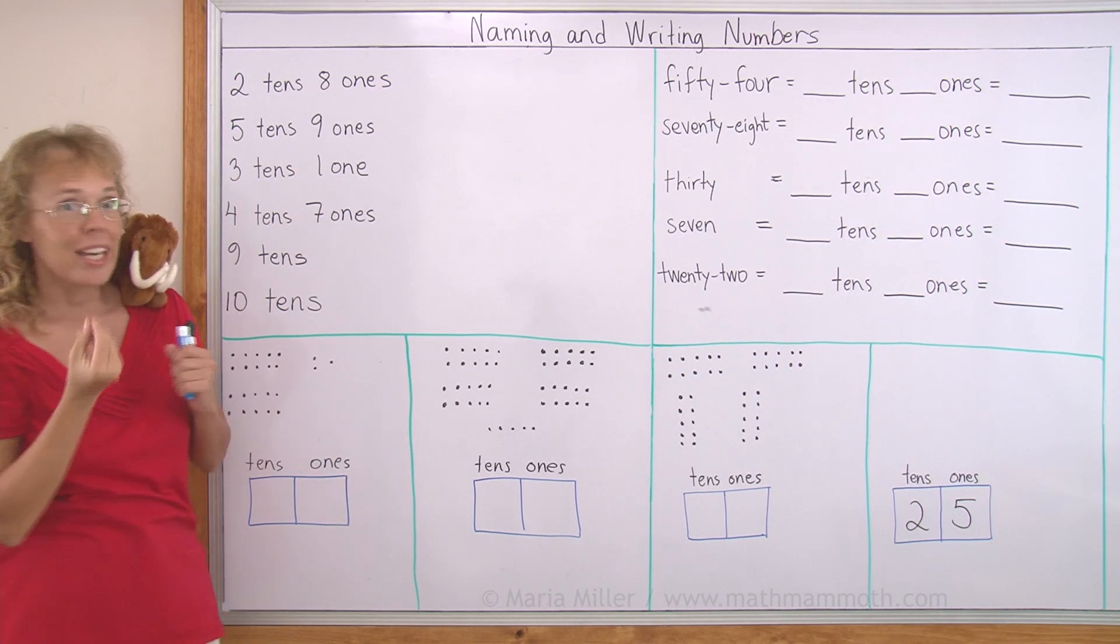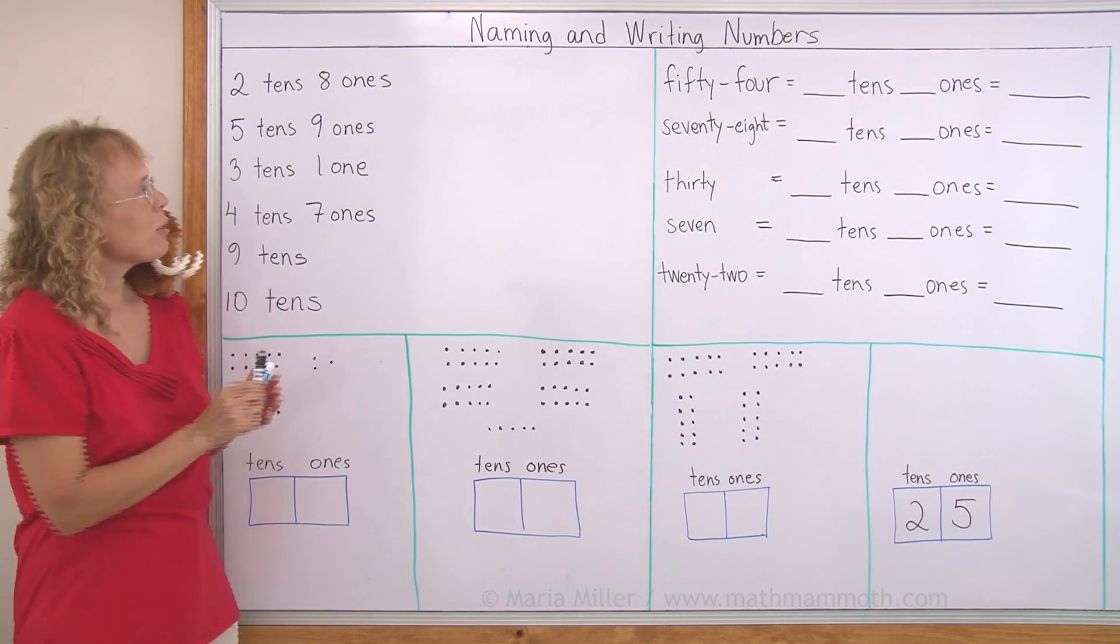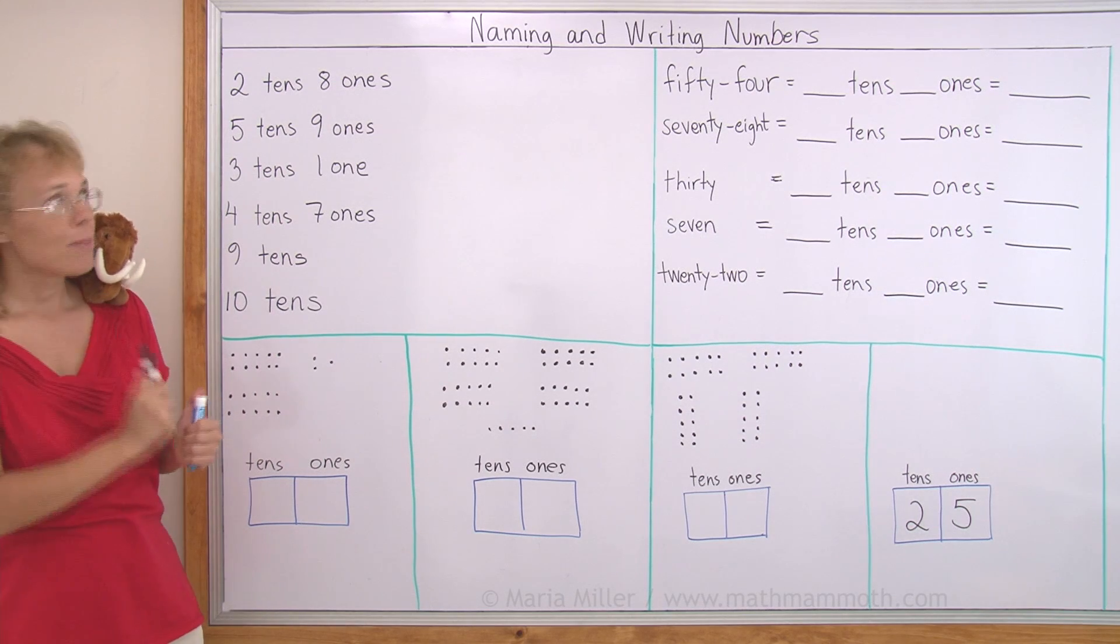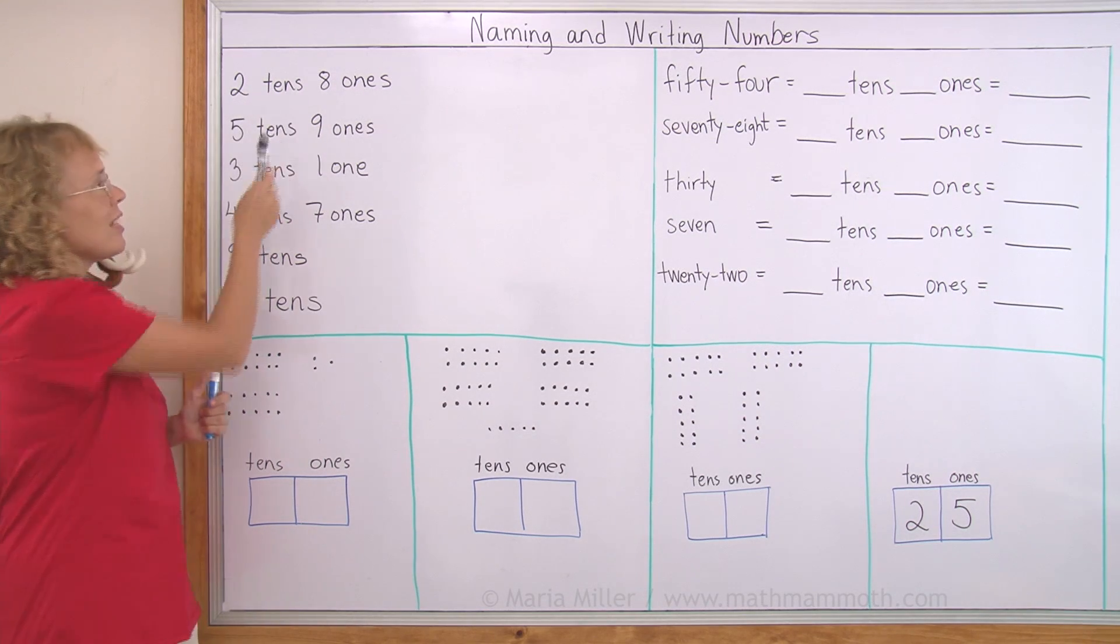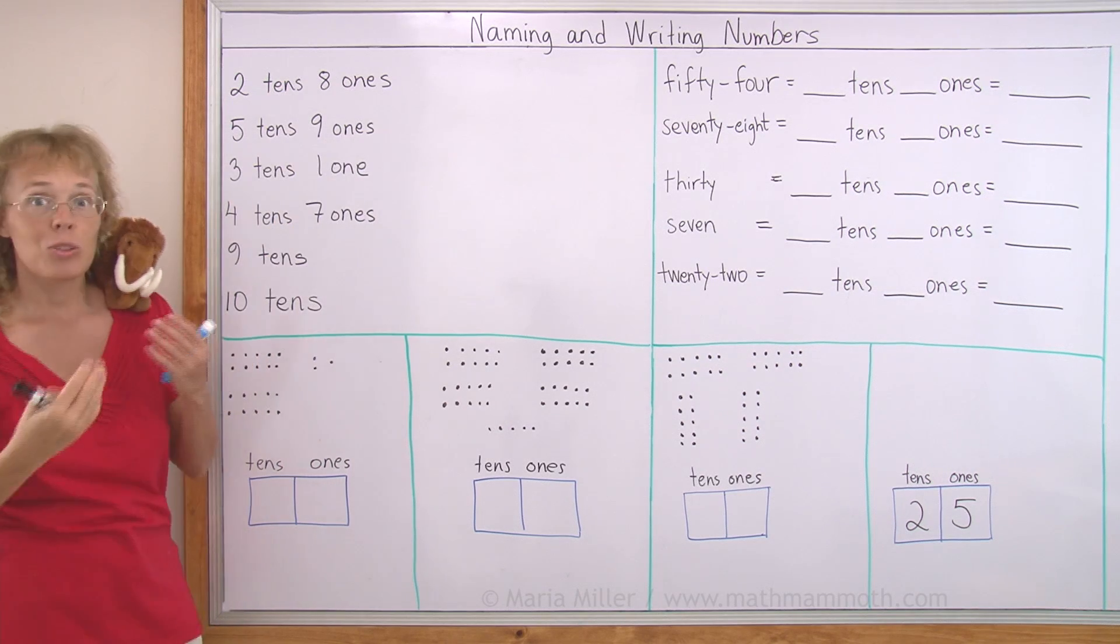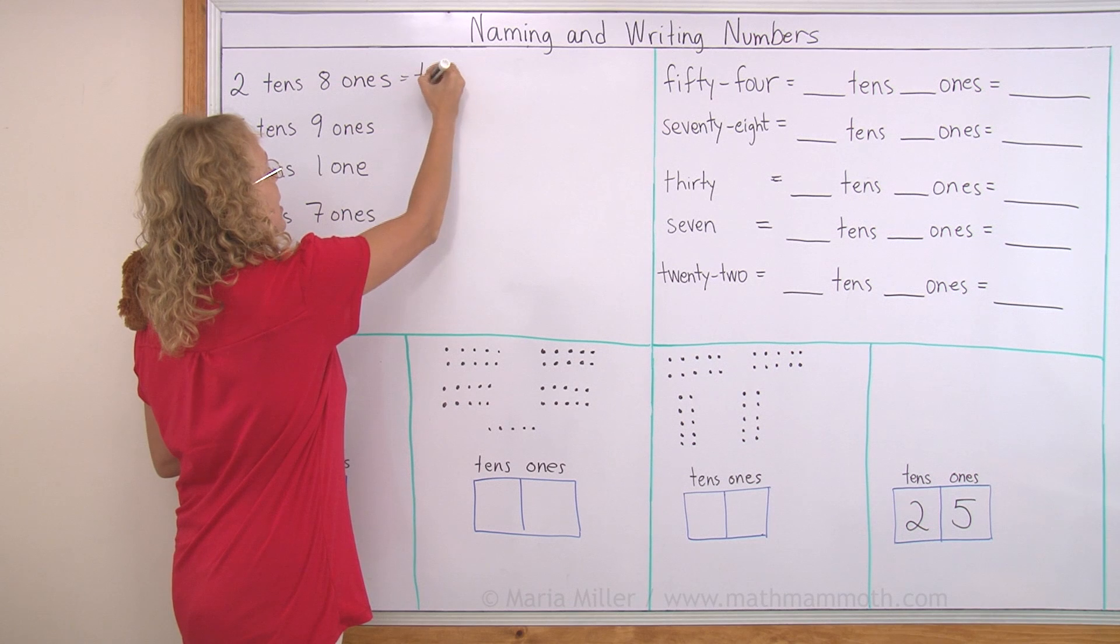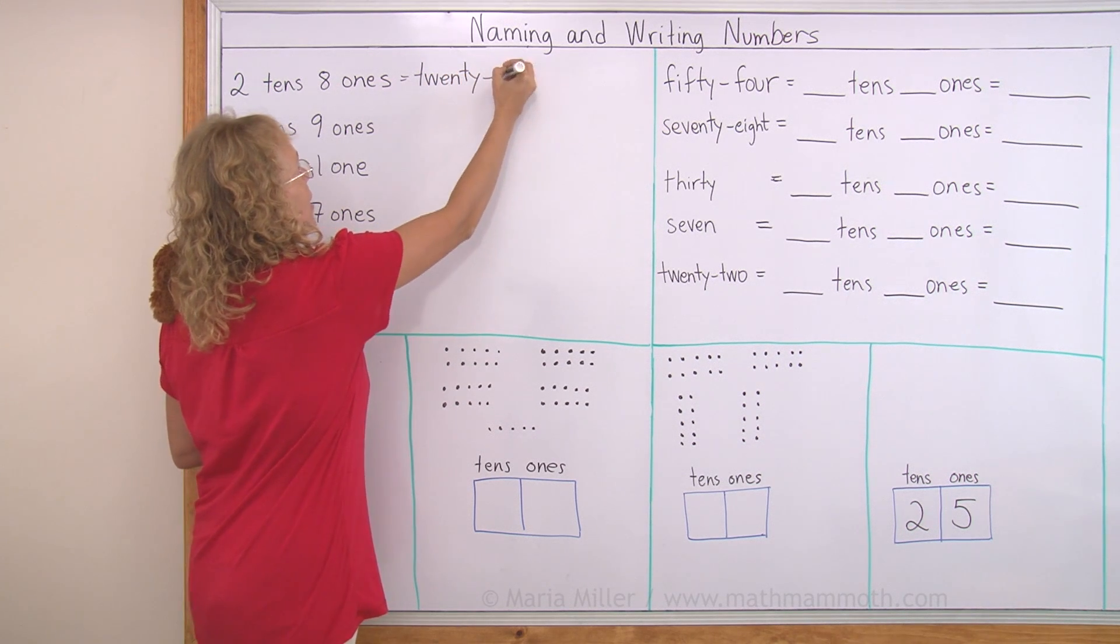I have a number here: two tens, eight ones. You could make it on the abacus, but we're just going to name it now and write it. Two tens, that is 20. So this number becomes 28, okay? If I want to write it, it is 20 and then 8.